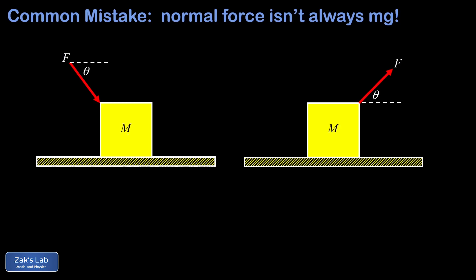So in our first two examples, we have an external force pushing on a block, but the force pushes at an angle. In the first case, that force has a downward component, and this is actually what causes the normal force to not be equal to the weight.